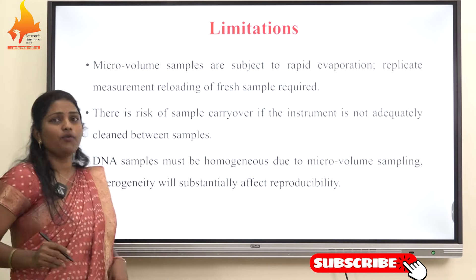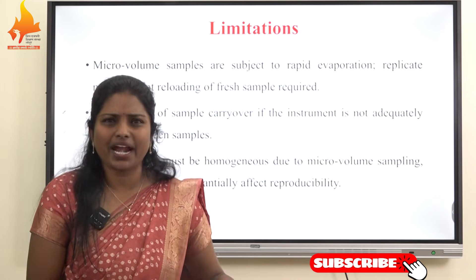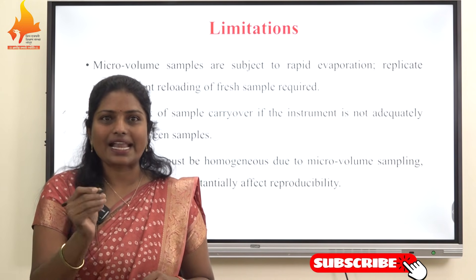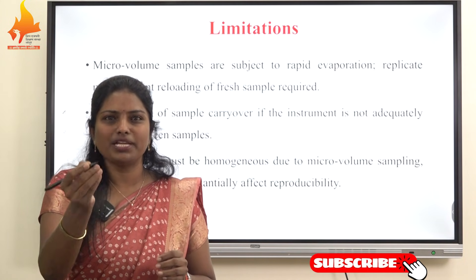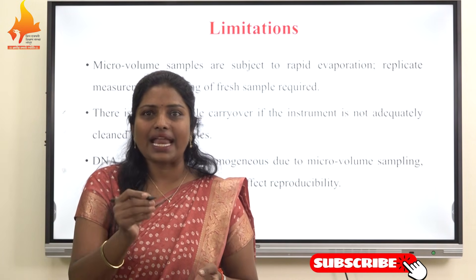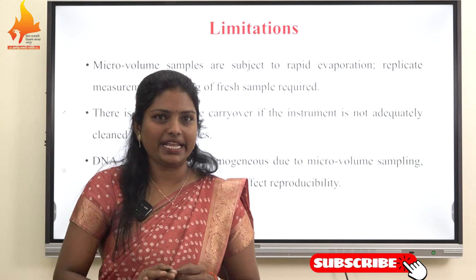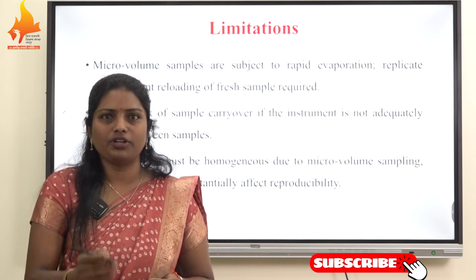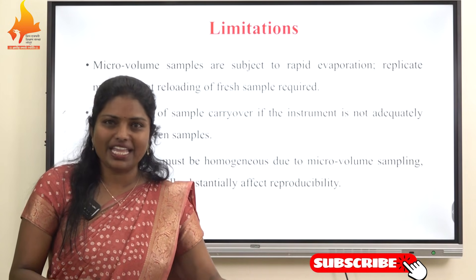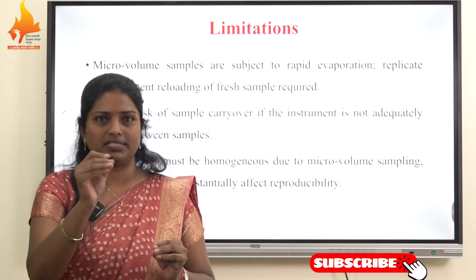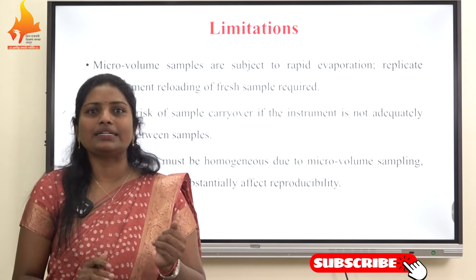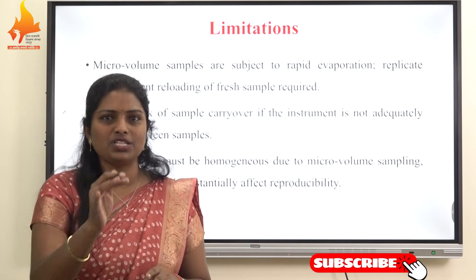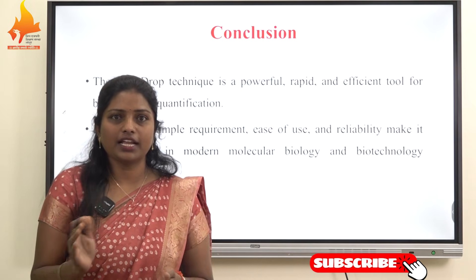Despite its many advantages, the nanodrop technique has certain limitations. Since it uses micro-volume samples, there is a risk of rapid evaporation which may affect accuracy if measurement is delayed. Improper cleaning of the pedestal can lead to sample carry-over, affecting subsequent readings. The nanodrop also has lower sensitivity compared to fluorimeter methods, especially for very low concentration samples. It cannot differentiate between DNA and RNA in a mixed sample, as both absorb at 260 nm. Additionally, the technique is not suitable for highly turbid or heterogeneous samples, which can interfere with absorbance measurements.